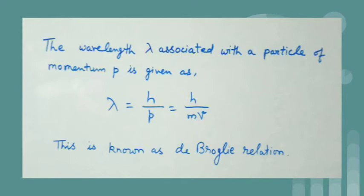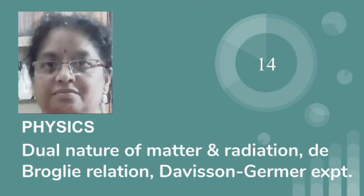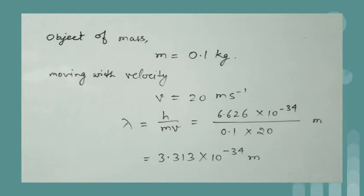For any heavy particle which we see around us in our day to day life, the De Broglie wavelength is not measurable. We can calculate the De Broglie wavelength of an object of mass 0.1 kg moving with a speed of about 20 meter per second which comes out equal to 3.313 into 10 to the power minus 34 meter. You can calculate this using De Broglie relation lambda is equal to h by p or lambda is equal to h by mv.